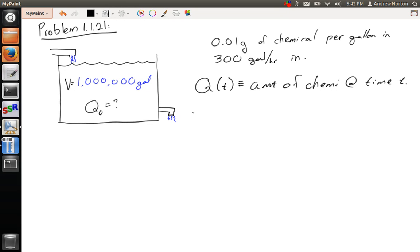And we're going to use q prime in the derivative. We're going to let this concentration of chemical per gallon, I'm going to just give this some arbitrary letter like alpha. And I'm going to give this 300 gallon per hour, I'm going to give that a capital R for rate.